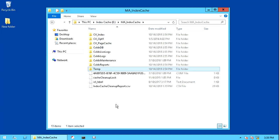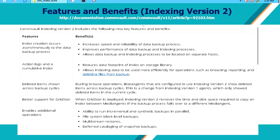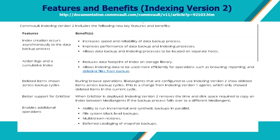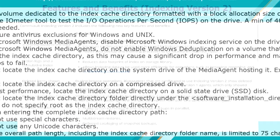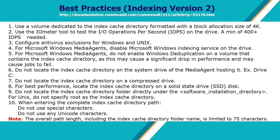Let's check the advantages of using indexing version 2. Commvault indexing version 2 has the following new key features and benefits. Please review the features and their benefits to understand more. Apply the following best practices to obtain the best results with local index storage. Ensure you periodically review these so you ensure the index cache is working as it should be.